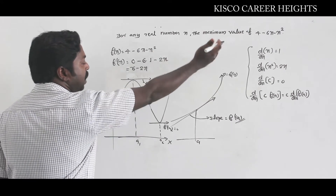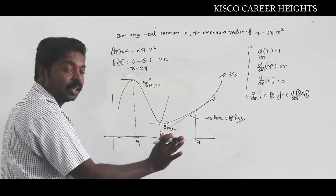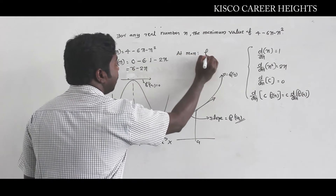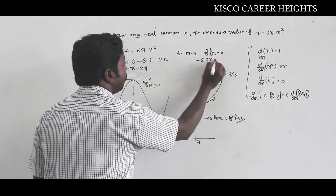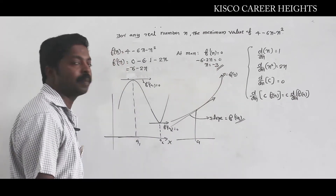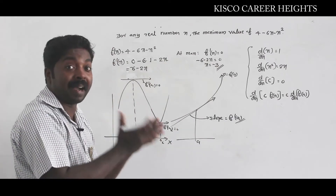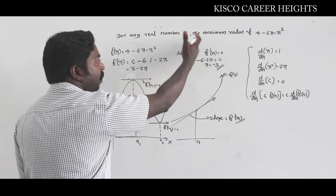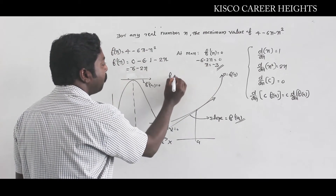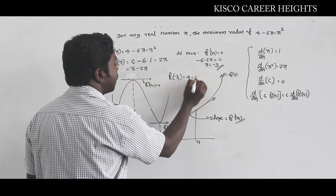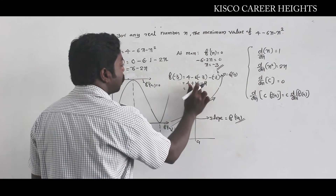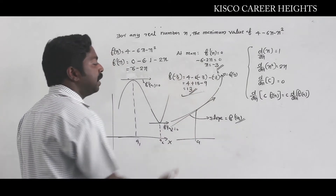We want the maximum value of this expression, so the derivative must vanish. Setting f'(x) = 0: -6 - 2x = 0, which gives x = -3. At x = -3, the function attains its maximum value. Substituting: f(-3) = 4 - 6(-3) - (-3)² = 4 + 18 - 9 = 22 - 9 = 13. So 13 is our maximum value at x = -3. That is the method of differentiation.